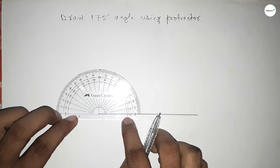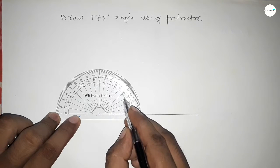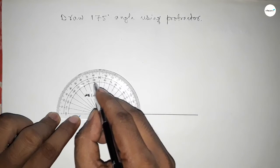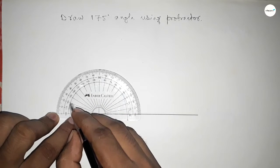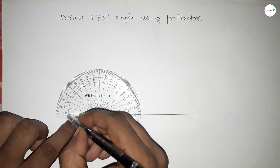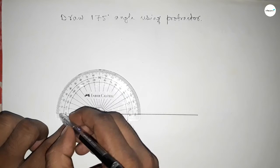So this is 0, 10, 20, 30, 40, 60, 70, up to between 180 to 170. We can get 175 degrees, so this is 175 degrees.